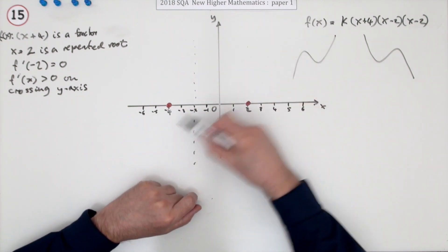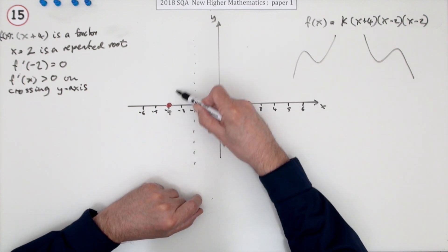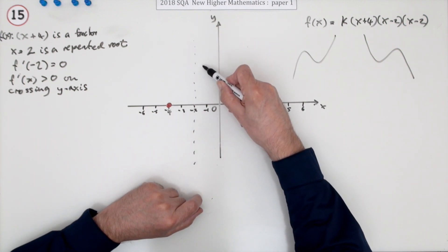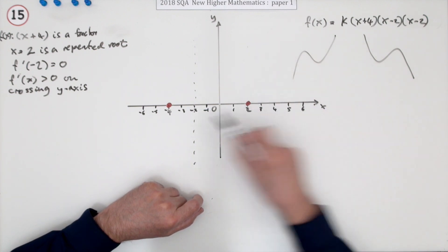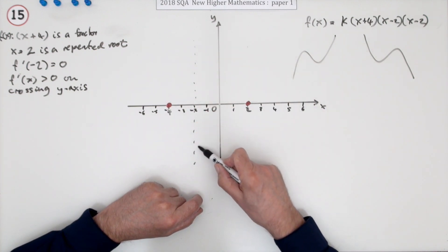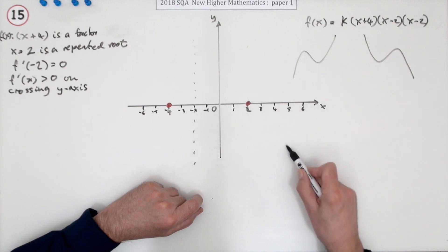Remember the two possibilities are: first one is either coming up through here, takes a turn, and then goes down to there and up, or it's this way round. It comes down from here, takes a turn, then it's got to go up there and down.